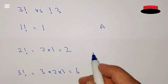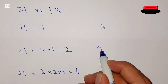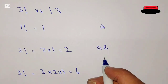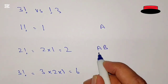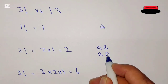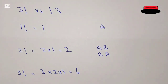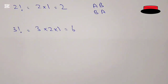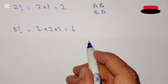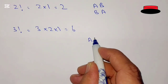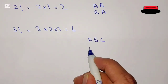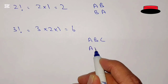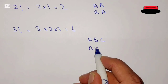We know that 1 factorial means it has 1 permutation, 2 factorial means it has 2 permutations — 2 into 1 and 1 into 2, or in other words a,b and b,a. For 3 factorial we have 6 permutations because the answer is 6.